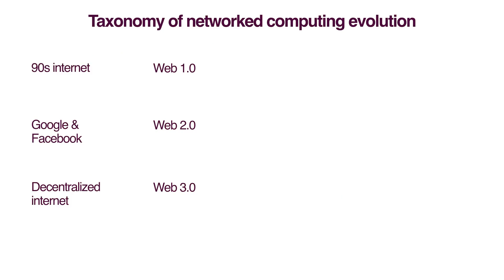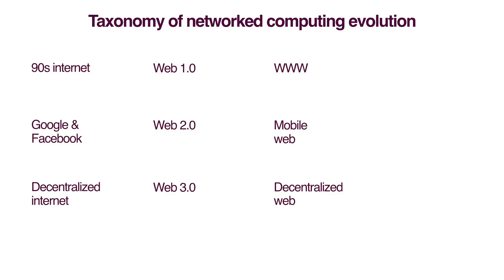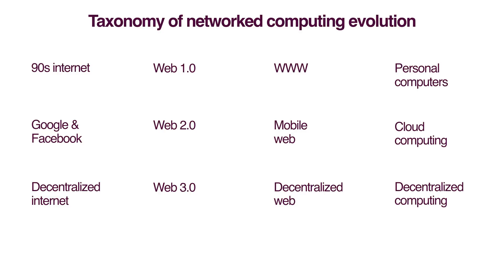Another way to look at this is Web 1.0, Web 2.0 — which was more interactive, people could actually post things, and apps became more interactive, but the data was being stored by the companies. And now we are looking at Web 3.0, which is more decentralized. Some people like to use the term the worldwide web, and the biggest change they noticed was the mobile web, and now they're calling it the decentralized web. I actually prefer the version where we had personal computers, then cloud computing, and now we are moving toward decentralized computing.